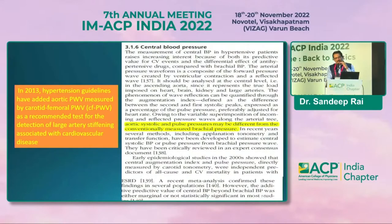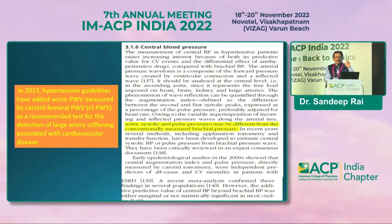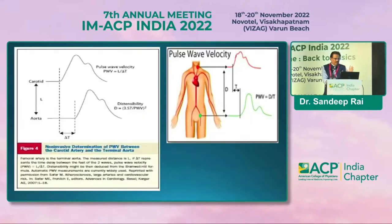They realized that your brachial blood pressure is not equal to your central blood pressure. Your aortic central blood pressure is the pressure your heart, brain, and kidneys are experiencing. The higher the central pressure, the more the end-organ damage — and it may not correlate with your brachial pressure. This is a seminal finding.